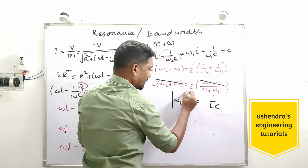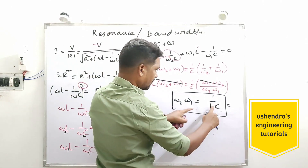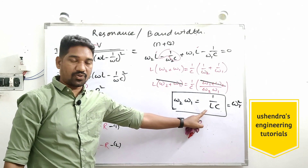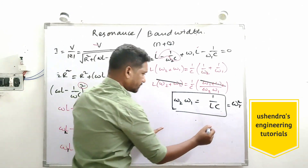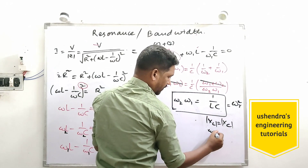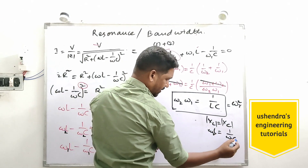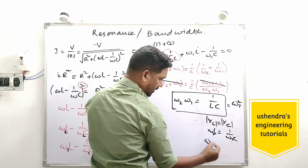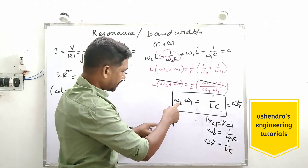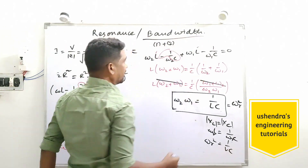This is an important result: ω₁ω₂ = 1/LC. Recall from the initial resonance discussion that at resonance X_L = X_C, meaning ωᵣL = 1/(ωᵣC), so ωᵣ² = 1/(LC). Therefore ω₁ω₂ = ωᵣ². We will use this result when subtracting equations 1 and 2 to find the bandwidth.